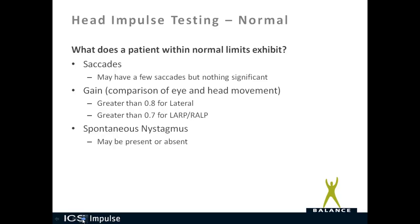Let's talk about head impulse test results. For a normal result, the patient may have a few saccades but nothing significant. The first thing we look at is whether saccades are present or absent. The second is gain, which compares eye and head movement. A gain greater than 0.8 for lateral is within normal limits; 0.7 for LARP and RALP is within normal limits, up to 1.2. Gains greater than 1.2 are not within normal limits. Spontaneous nystagmus may be present or absent.